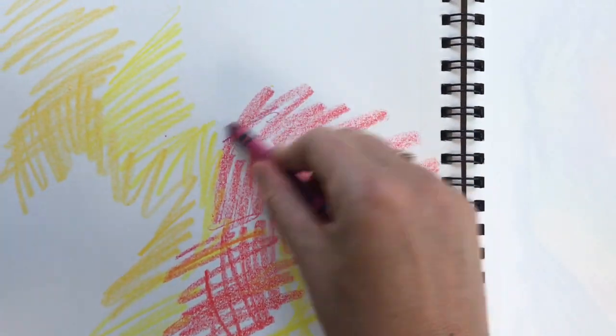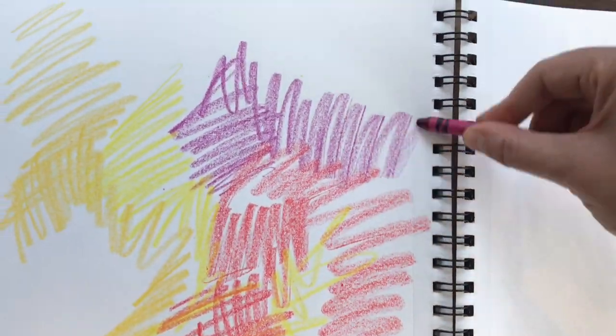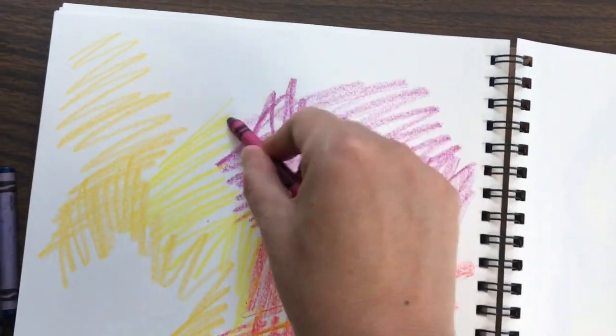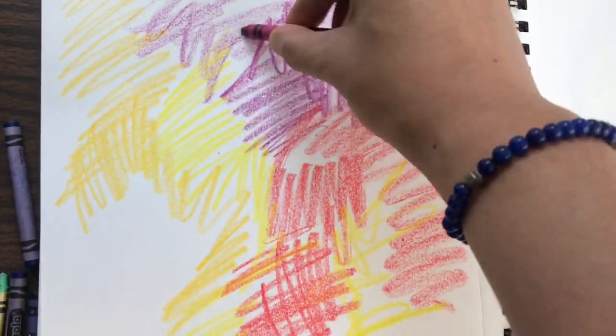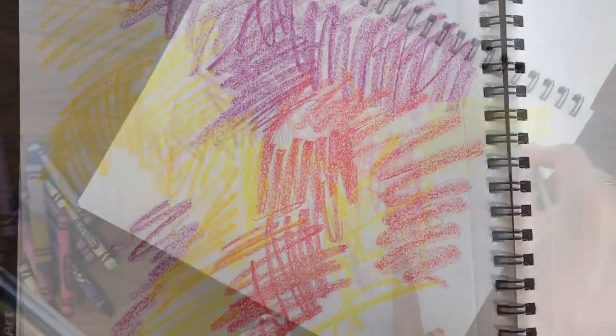So these are our warm colors. We have our reds and our oranges and our yellows. They are warm like fire. They went flying off my table. I'm going to give you some fast motion and we'll fill in the rest of this page.